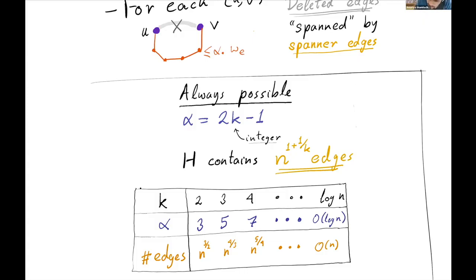Conversely, there exist graphs with n^(3/2) edges which cannot be sparsified any further because they don't contain any 4-cycles. If you don't contain any 4-cycles, there's no edge you can delete, because if there's a 5-cycle, deleting an edge makes it stretch by a factor of 4. We can do this for any value of k up to log n. At log n, the number of edges becomes O(n), and we can't really sparsify it any further.